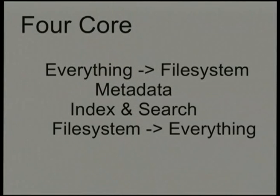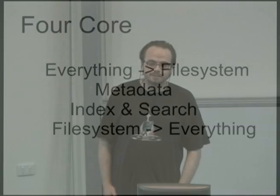The four areas of LibFerris are: to make anything that smells like data into a virtual file system; to extract and store metadata for anything that is a virtual file system; and then once you've got a file system and metadata, to allow you to do indexing and search on anything that LibFerris can present. The last trend has been to take anything that's a LibFerris virtual file system and turn it into any other data model that might be useful — so you can get at the file system as a SQLite virtual table.